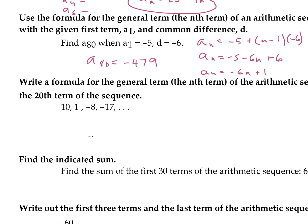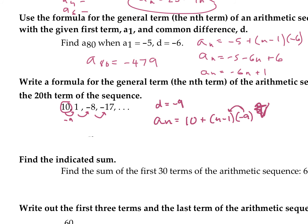Next one — we're doing the same thing but we have to find the common difference because it doesn't give it to us. We subtract 9, subtract 9, subtract 9 — so our common difference is negative 9. Plug into our formula: a_sub_n equals a_sub_1, which is 10, plus n minus 1 times negative 9. Distributing: 10 minus 9n plus 9, so 19 minus 9n. It asks us to find a_sub_20, so plug in 20 and we get negative 161.